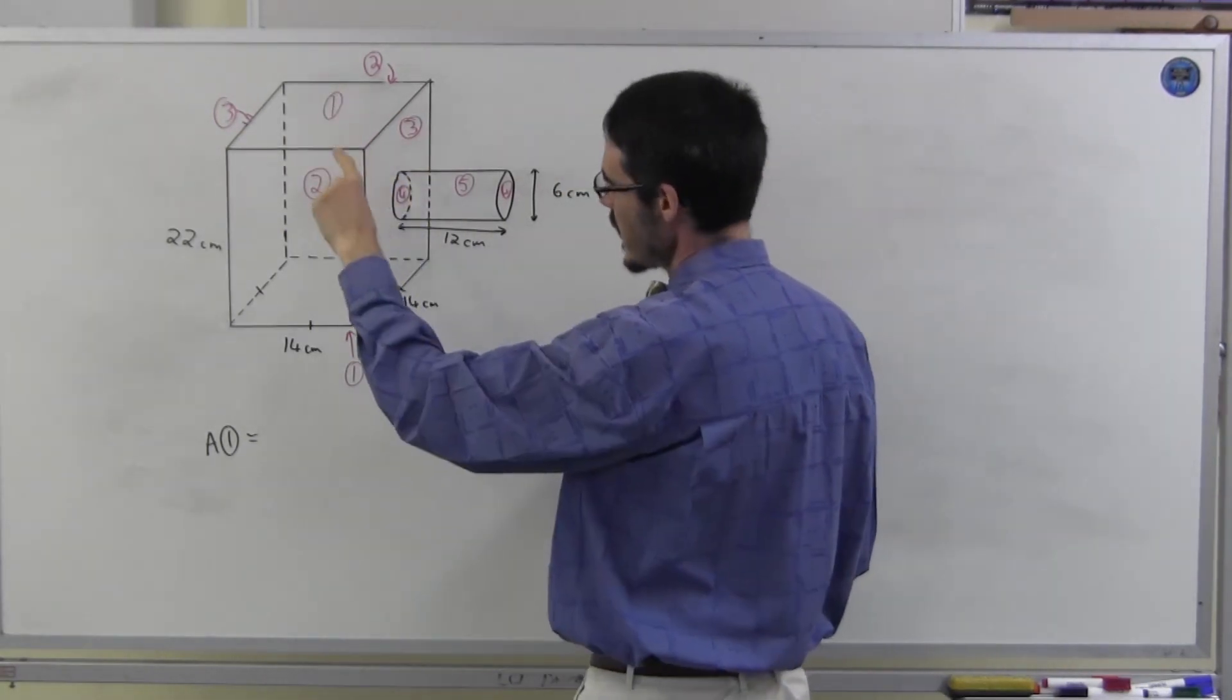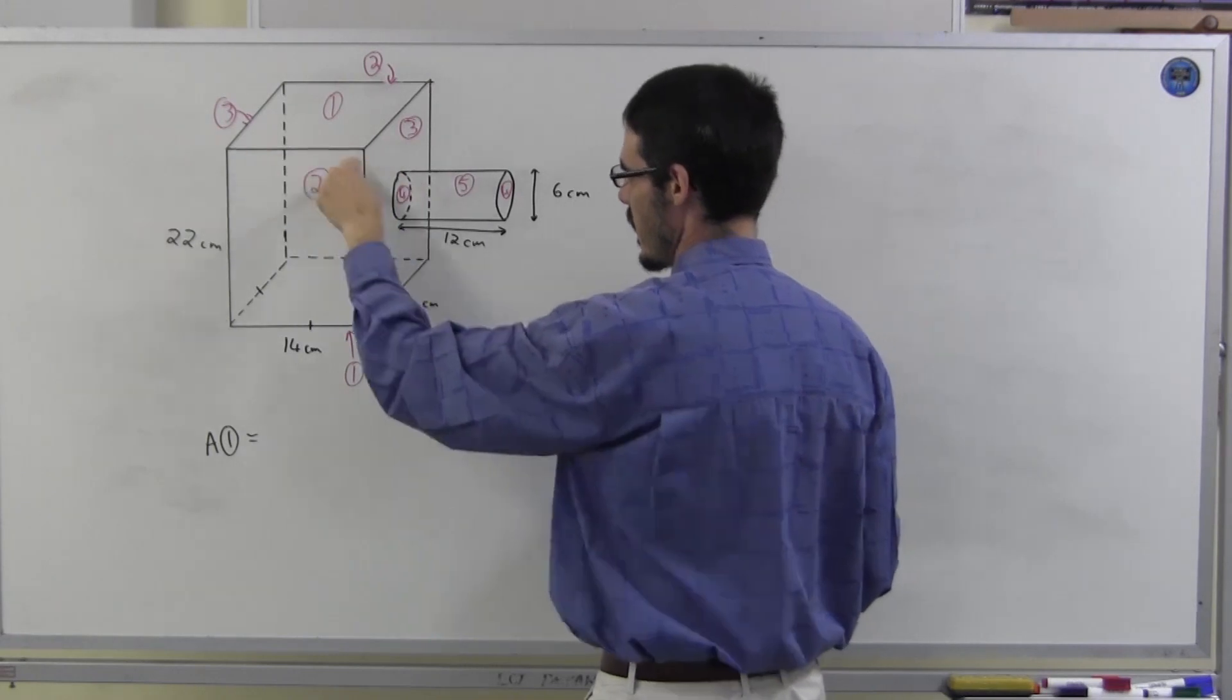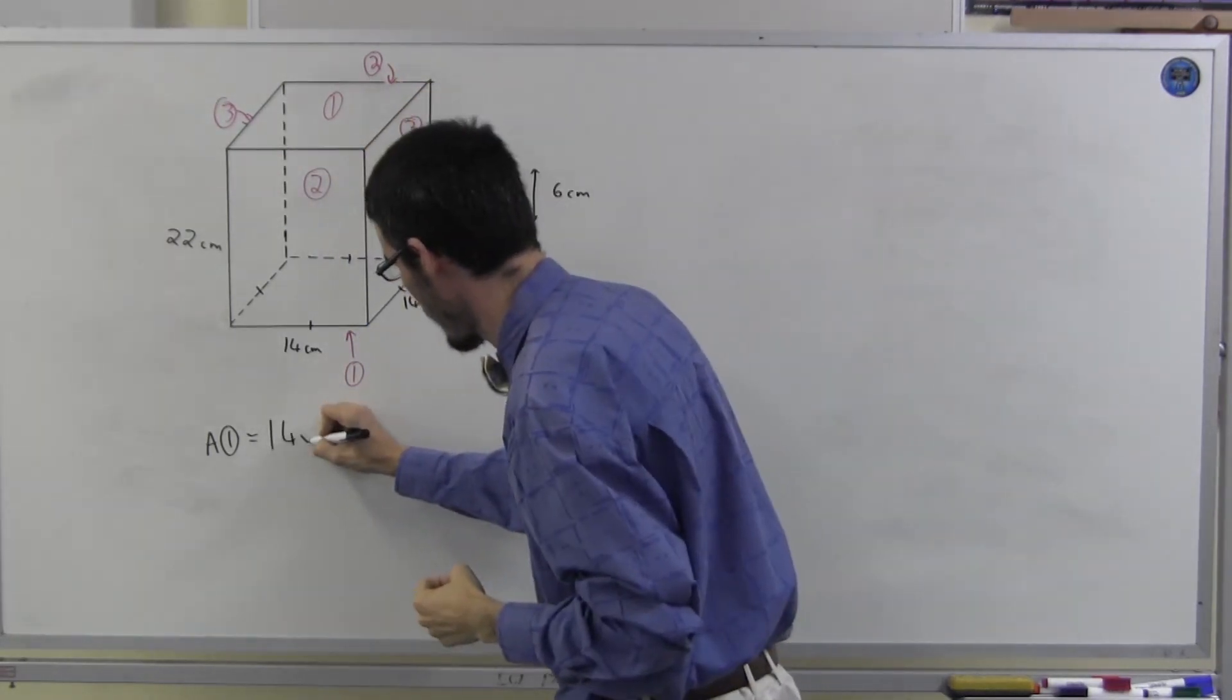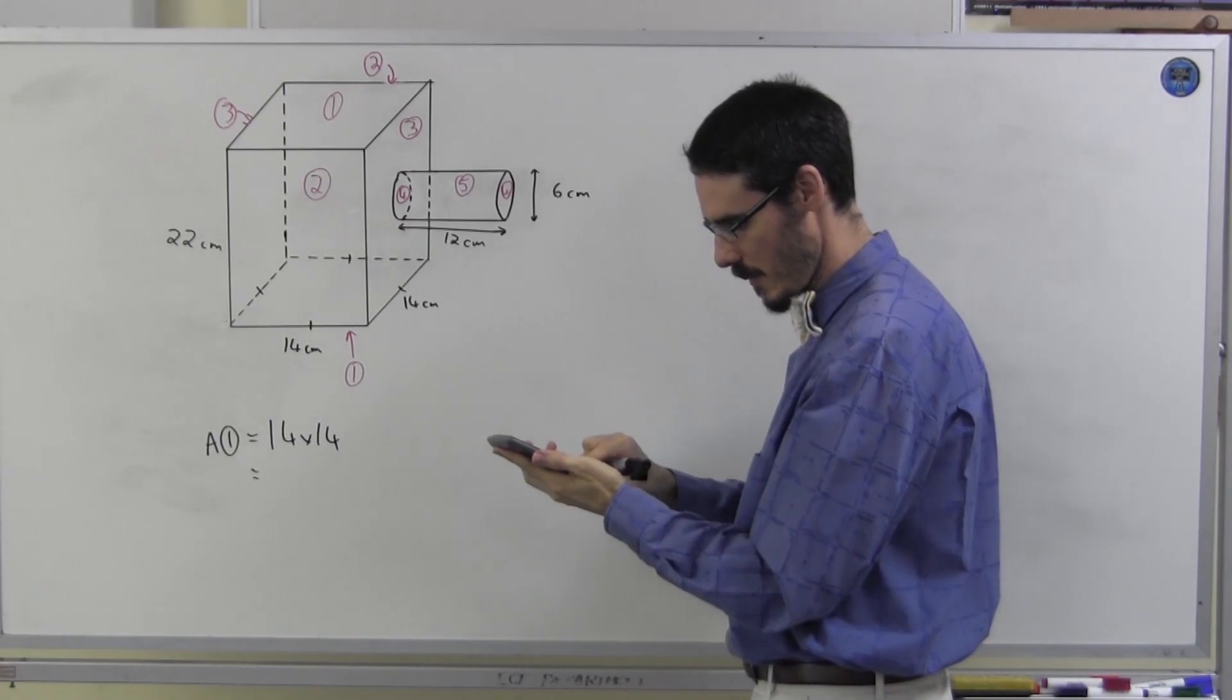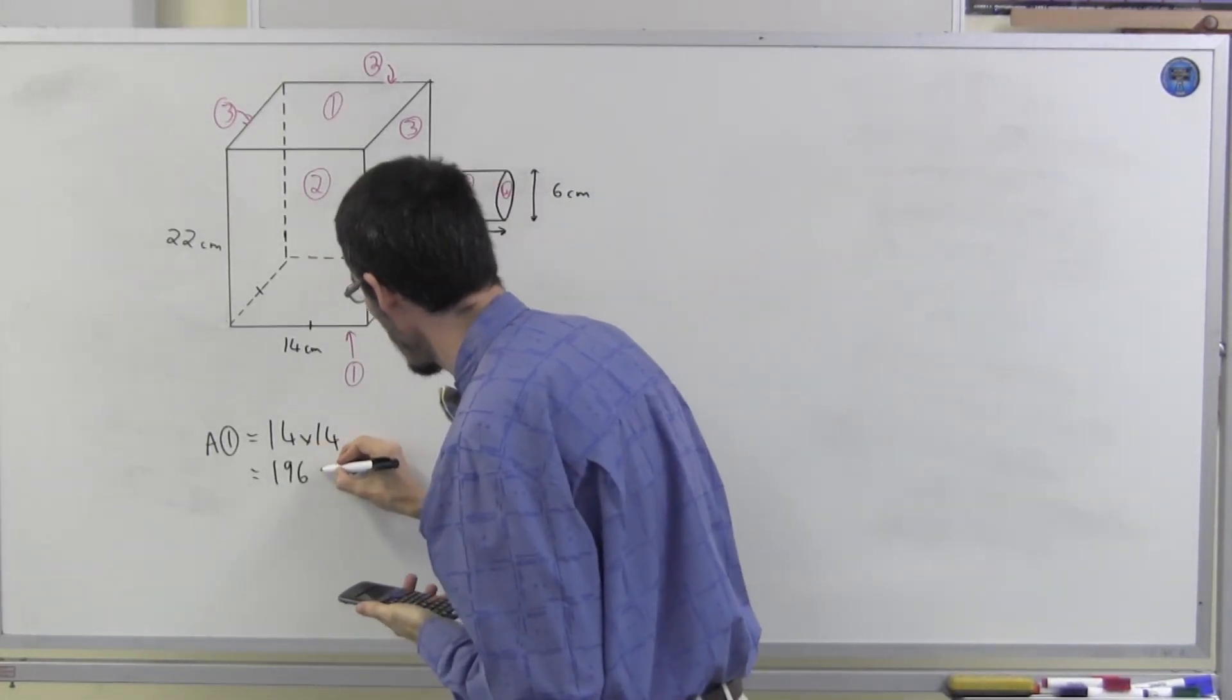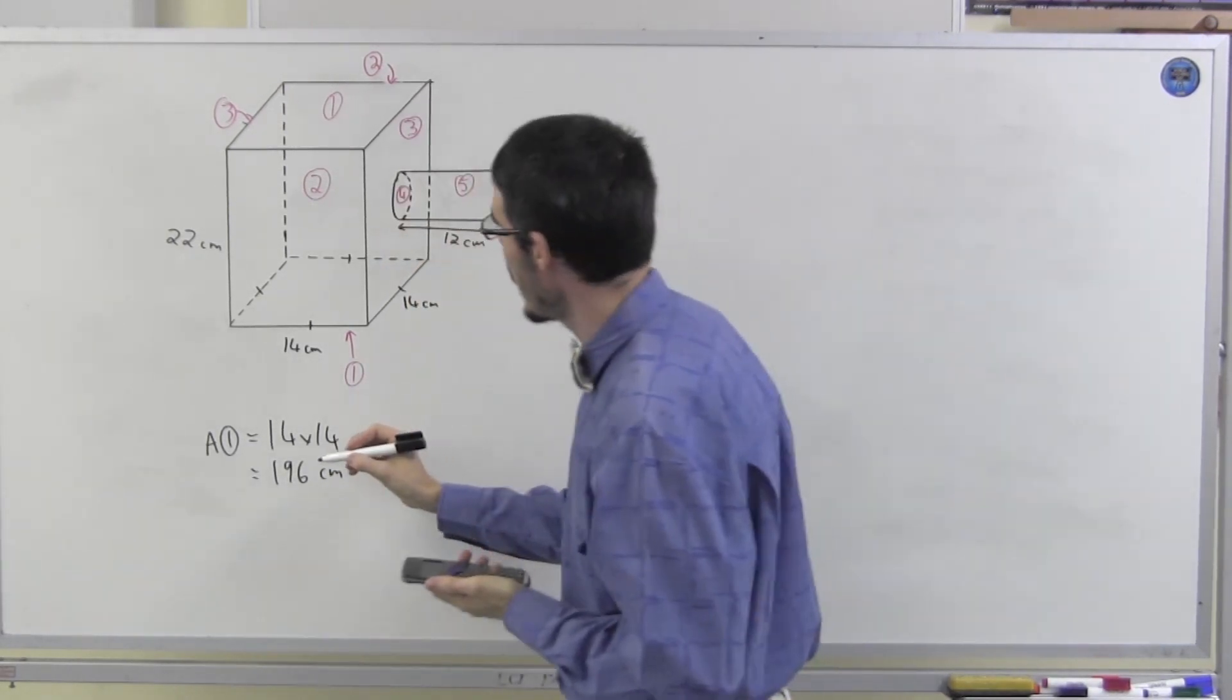Area one is 14 by 14. Of course, it's a square. And I'm not absolutely confident of my 14 times tables, so I'm just going to get my calculator and double check. 196 square centimetres. Okay.